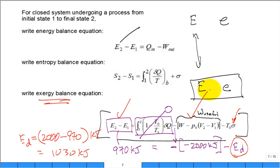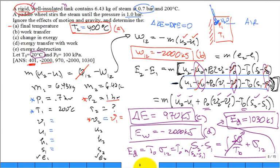The paddle wheel is very irreversible — lots of friction — so 1030 kJ of useful work ability is destroyed. What's left is 970 kJ. As the most clever engineer, you might recover 970 kJ. Analogy: you deposit 2000 dollars in the bank; the bank says a paddle wheel worked in the vault last night, 1030 dollars is gone, and the best you can hope to withdraw is 970.